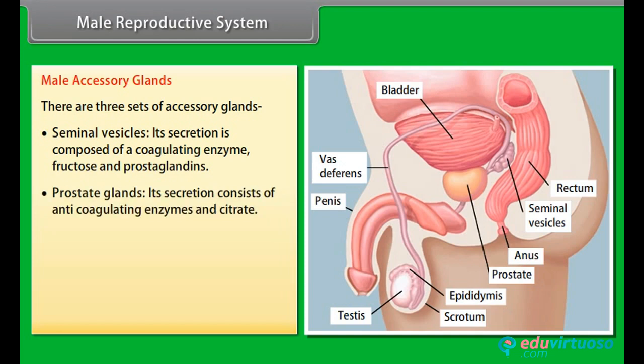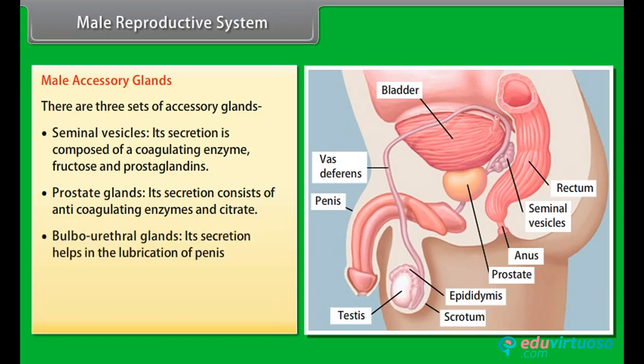The prostate gland secretes anti-coagulating enzymes and citrate. The bulbourethral glands produce a secretion that helps in lubrication of the penis. The secretions of these three glands together constitute the seminal plasma.